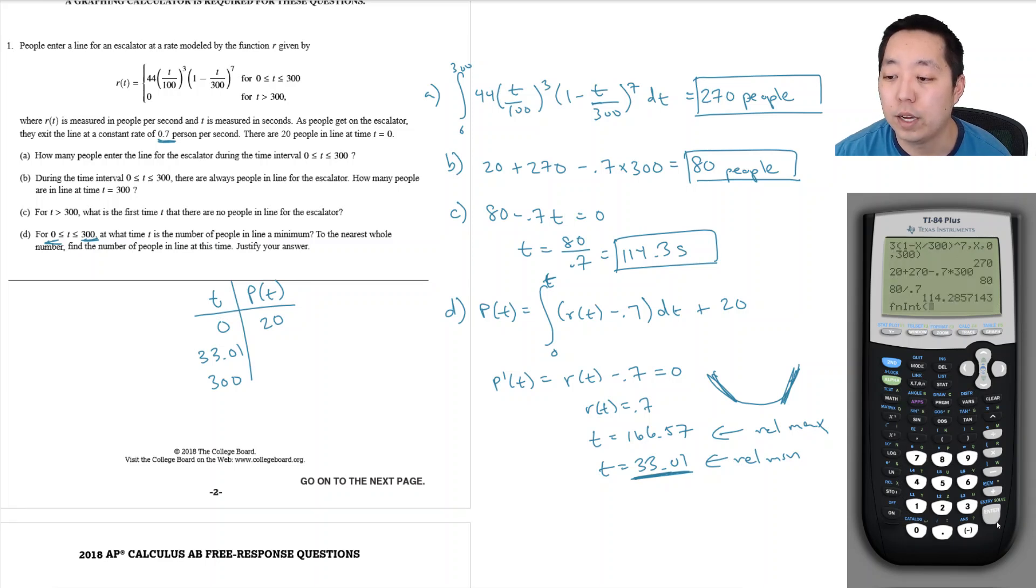I know we started off with 20 people. The second part is to calculate this integral plugging in 33.01. I'll do the integral of 44x divided by 100 cubed times (1 minus x divided by 300) to the 7th, subtract 0.7, integrate over x from 0 to 33.01.